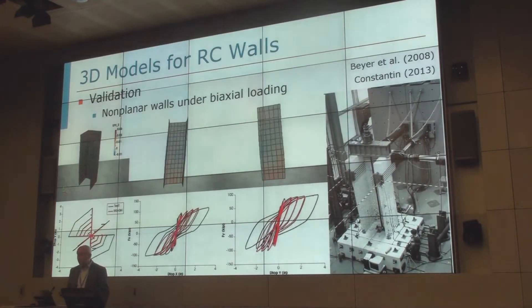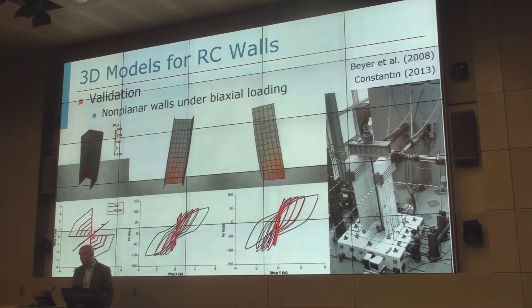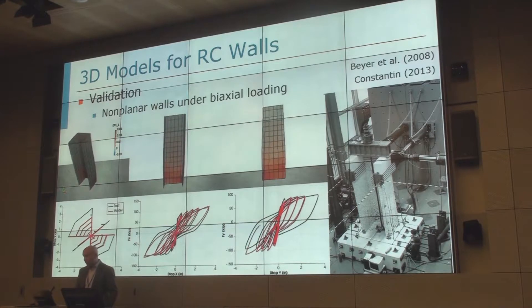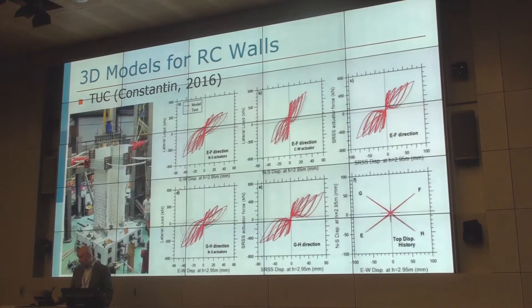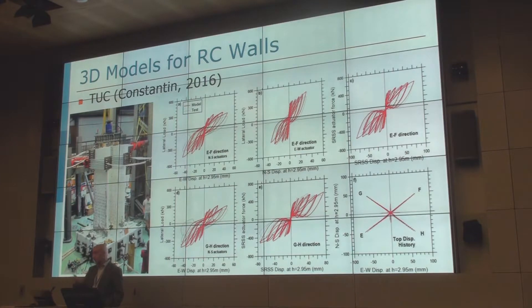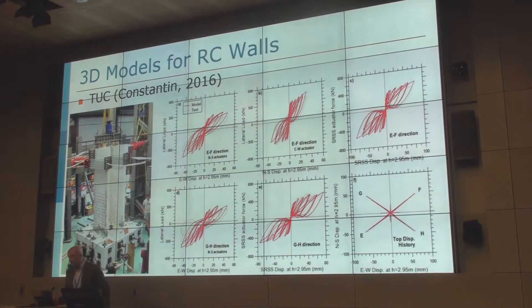Then we also moved on to multi-directional loading of the U-shaped wall. With this finite element formulation, which was expected to perform well, it did perform well. We validated against several tests of U-shaped walls subjected to different loading patterns, and the results with the finite element are pretty good. Even this diagonal loading, which was an issue with the macro model, now seems to be predicted better with the finite element model, which is expected.